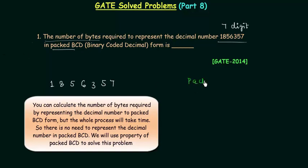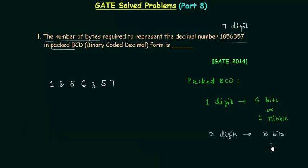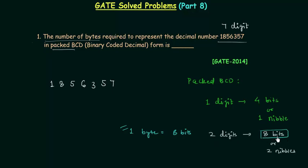In packed BCD form, we use four bits to represent one digit. We represent one digit by using four bits, or one nibble, since one nibble equals four bits. We represent two digits using eight bits, and since one byte equals eight bits, we use one byte to represent two digits.